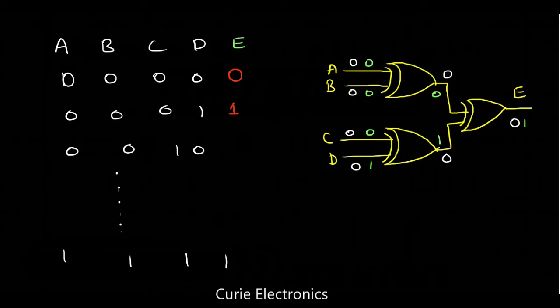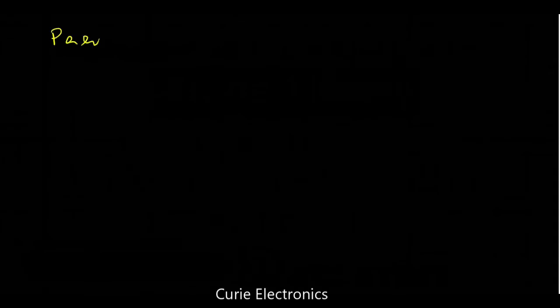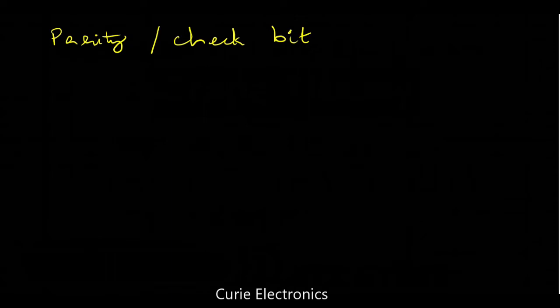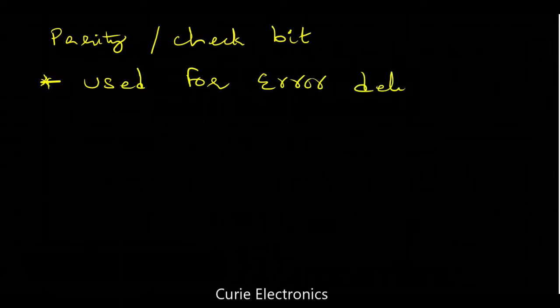This is how the parity bit is generated. The parity bit is also known as the check bit and it is used for error detection — not for error correction, only error detection. And we can detect only a one-bit error.